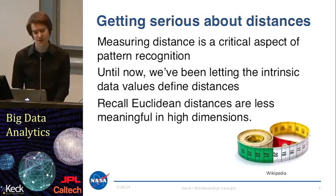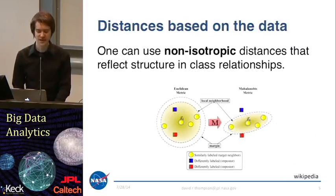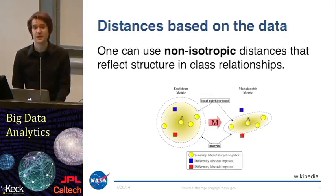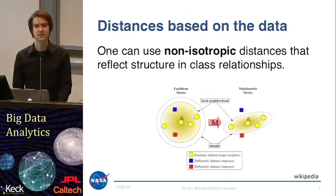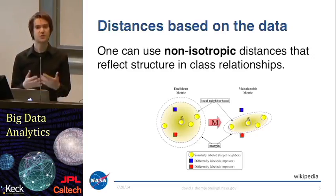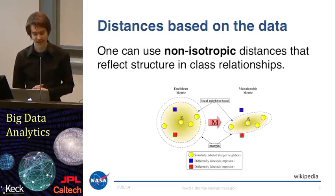Metric learning is based on the idea that we can define new distance metrics — new rulers for measuring distance in higher-dimensional spaces — that are based on properties of the data itself. These are non-isotropic distances that reflect some intrinsic structure in the data.